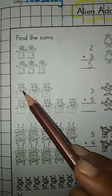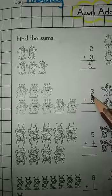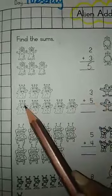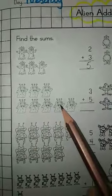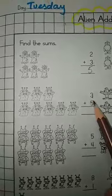Now count these. One, two, three. Number three. One, two, three, four, five. Number five.